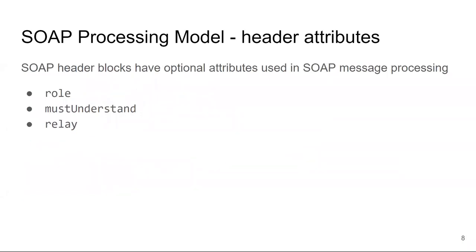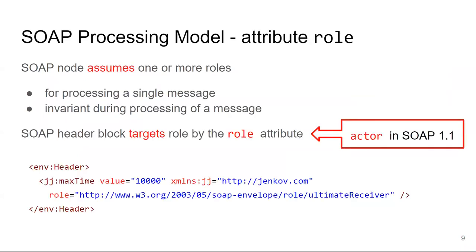To configure or hint at how the SOAP message should be processed — and again, we are talking about intermediaries and header blocks — those header blocks will have three new attributes. Some of those we have seen already, but today we are going to explain them. The three new attributes for each header block will be: role, the must understand attribute, and the relay attribute.